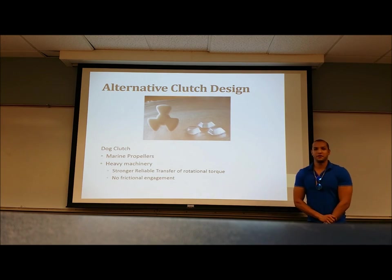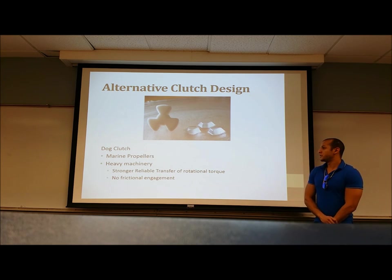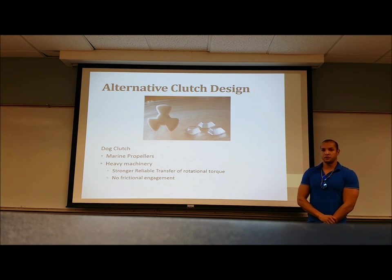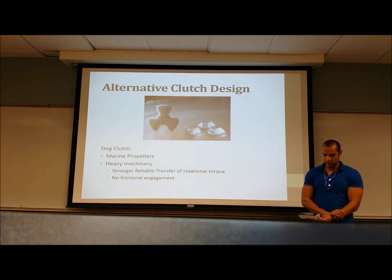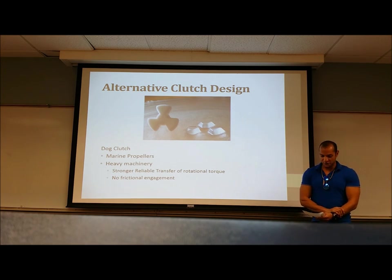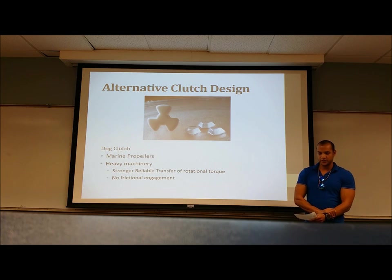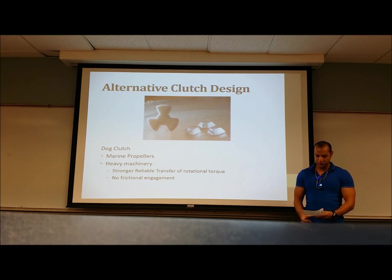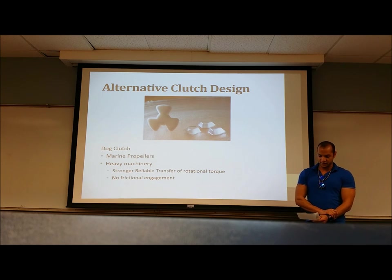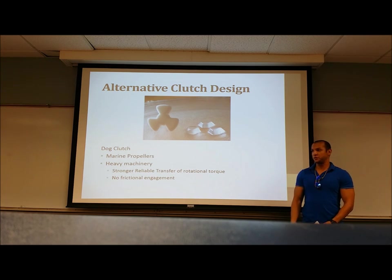Now I'm going to talk about the alternative clutch designs, particularly the dog clutch. These are typically used in marine propellers and heavy machinery, and they provide a strong, reliable transfer of rotational torque, with less friction during engagement. This is also used while maintaining a constant speed. This is achieved by creating a set of teeth on one end of the shaft with identical teeth on the other shaft. Due to the lack of slippage when engaged and disengaged, there is a reduction of wear and tear on the plate and the power transfer is immediate.